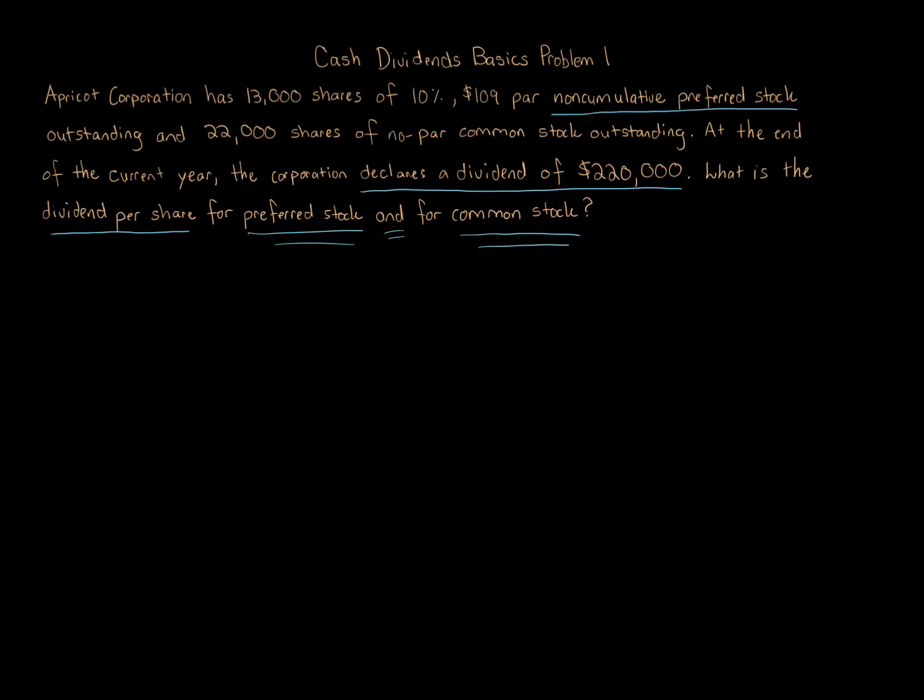The corporation declares a dividend of $220,000. The preferred stock is 10%, $109 par, non-cumulative preferred, and there's 13,000 shares. There's 22,000 shares of common. The way we do this is we start with the preferred. You always start with the preferred. That's why it's called preferred stock.